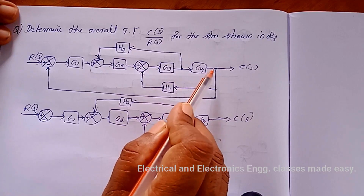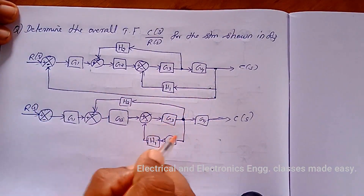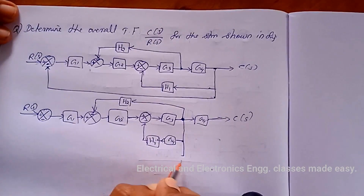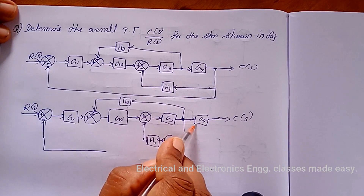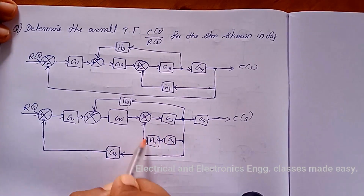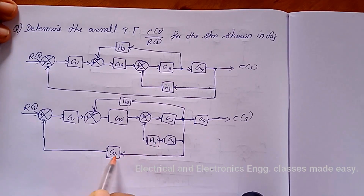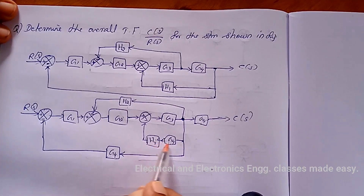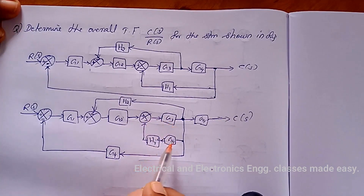When we move this branch point to this side, this feedback path also moves. From this point we draw the feedback path, but we have to add the block with the same transfer function — that is G4. Since there are two feedback paths, we add the block G4 in both feedback paths. Now we can combine these two cascaded blocks, so we get H1·G4 as one feedback path.